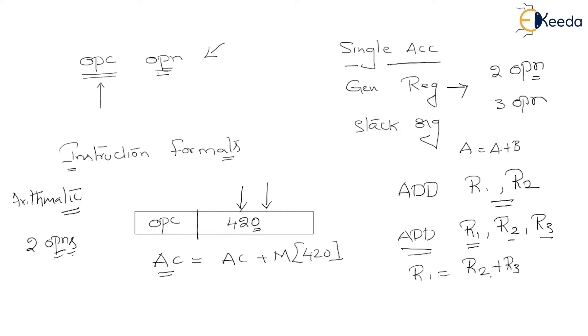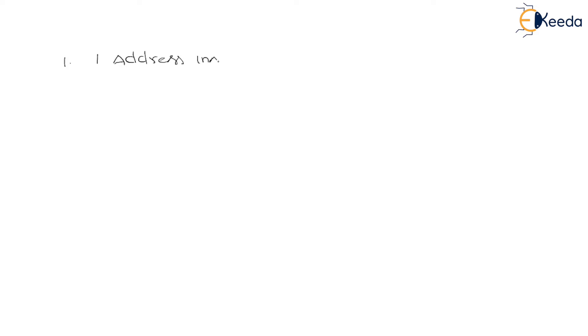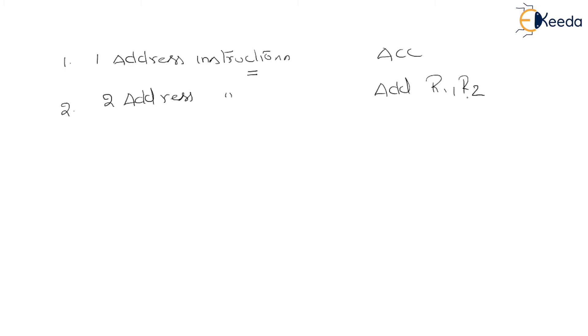So these are the various instruction formats. The first one is the one address instruction, in which an instruction can contain a maximum of only one operand, and the second operand is always the accumulator. The second one is the two address instruction, in which two operands can be directly specified with an instruction, such as: add r1, r2. And the third one is the three address instruction, in which three operands can be specified with an instruction — for example: add r1, r2, r3.